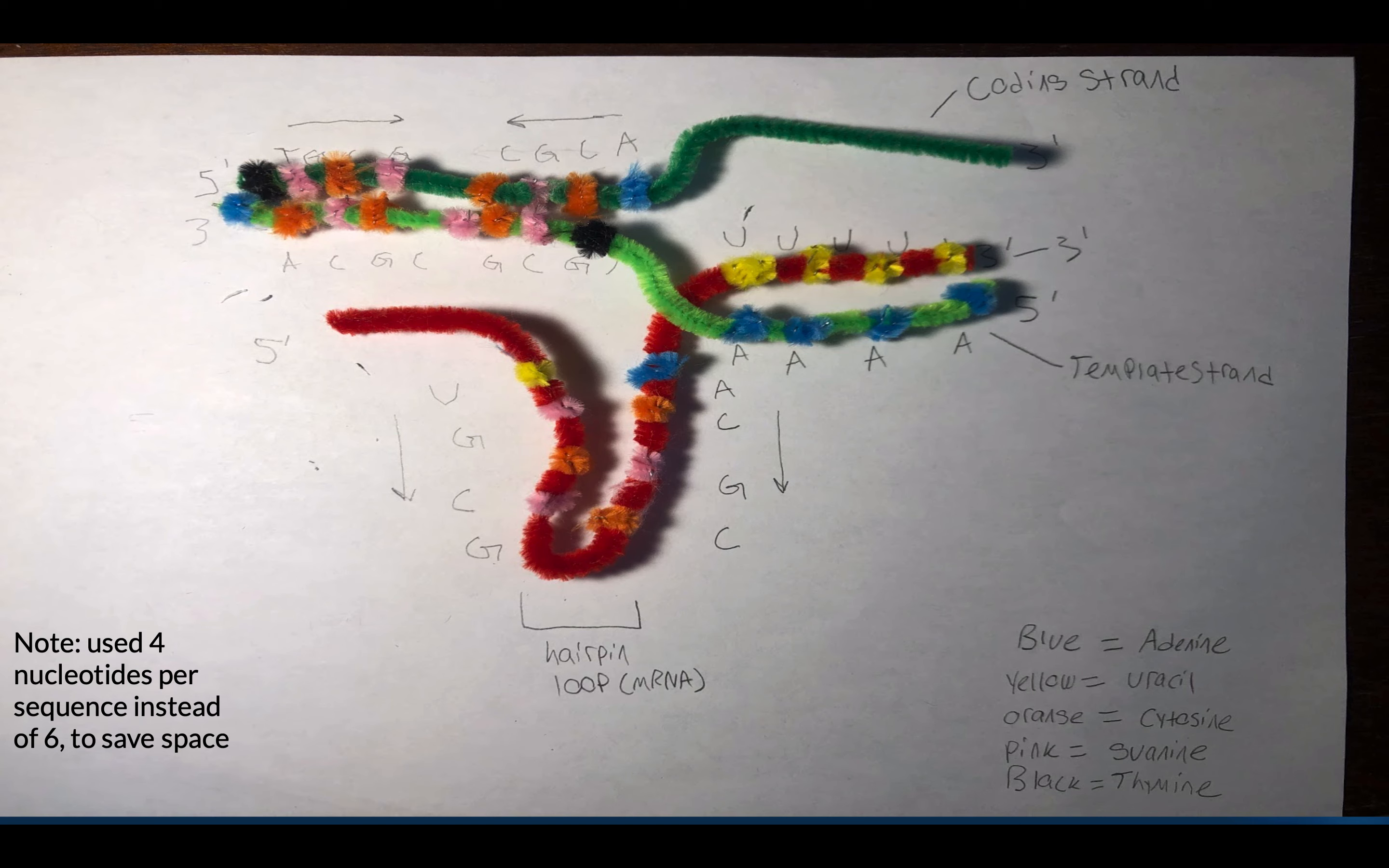This hairpin structure is followed by a string of repeating adenine bases known as a poly-A tail. These adenine bases code for uracil on the mRNA, and since adenine and uracil bases form weak bonds with each other, the mRNA molecule can easily remove itself from the DNA molecule.